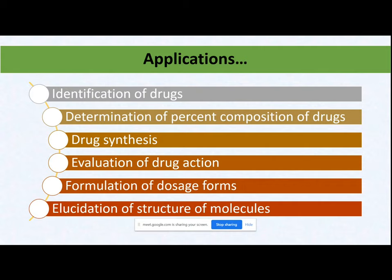Fifth, the formulation of a dosage form. Once you know the drug's physical properties, you will accordingly select your excipients and, depending on those properties, you will decide which dosage form you are going to make for that drug.